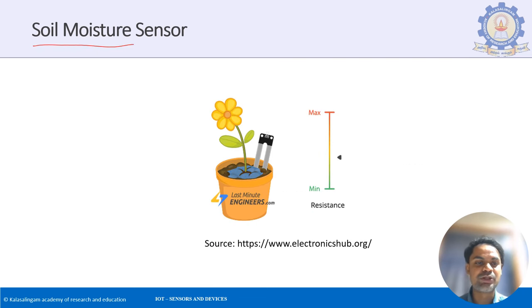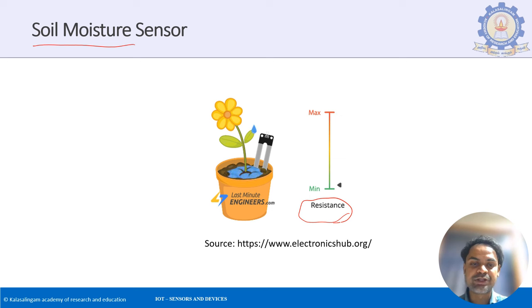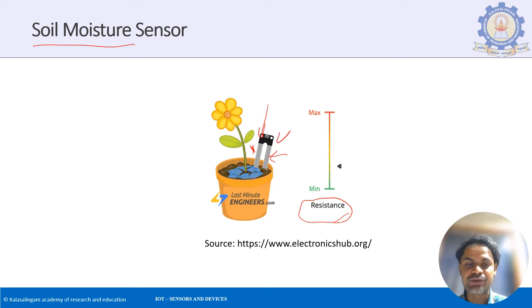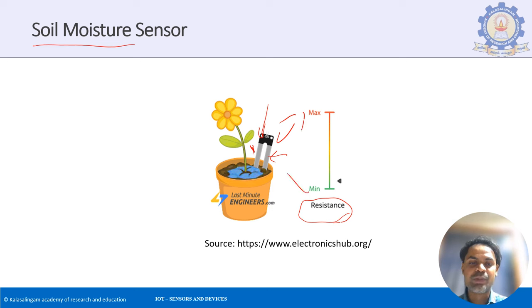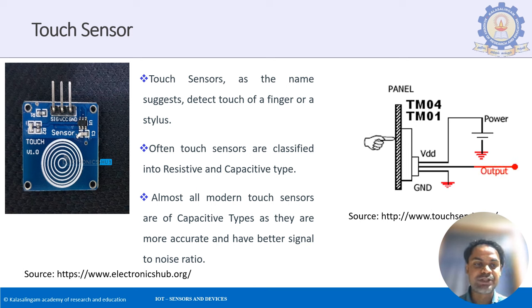A simple soil moisture sensor gives resistance as its output. When water is present, resistance is very low because water is a good conductor, increasing conduction between the two plates. When there is no water, there is no current flow between the plates, so resistance is very high.